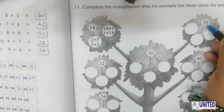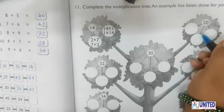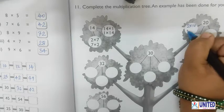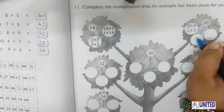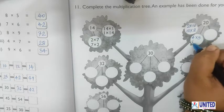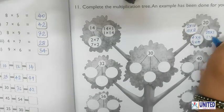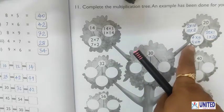Let's start writing the multiplication facts. For the number 20: 2×10=20, 10×2=20, 4×5=20, 5×4=20, 21×1=20, and 1×20=20. So in this way you can write the facts of a number — we also call these numbers the factors of that number.